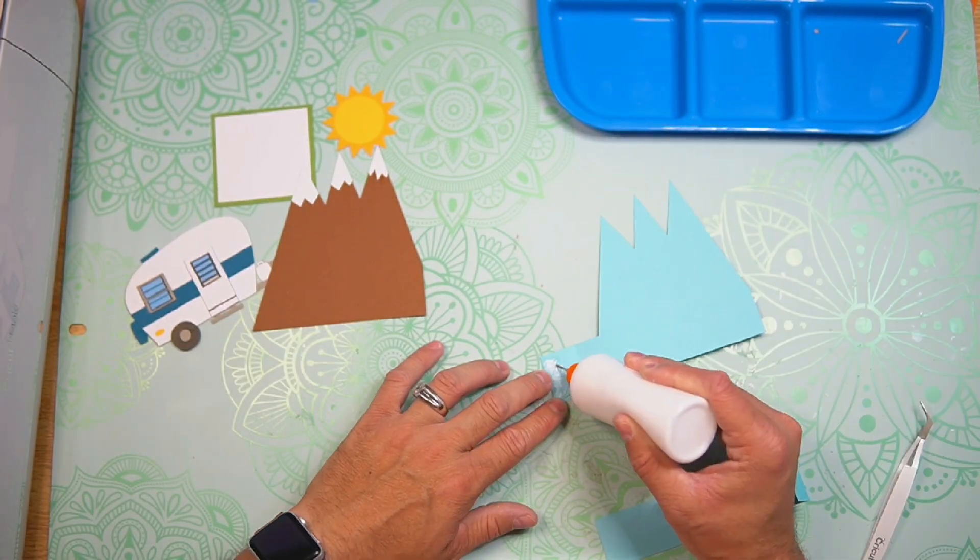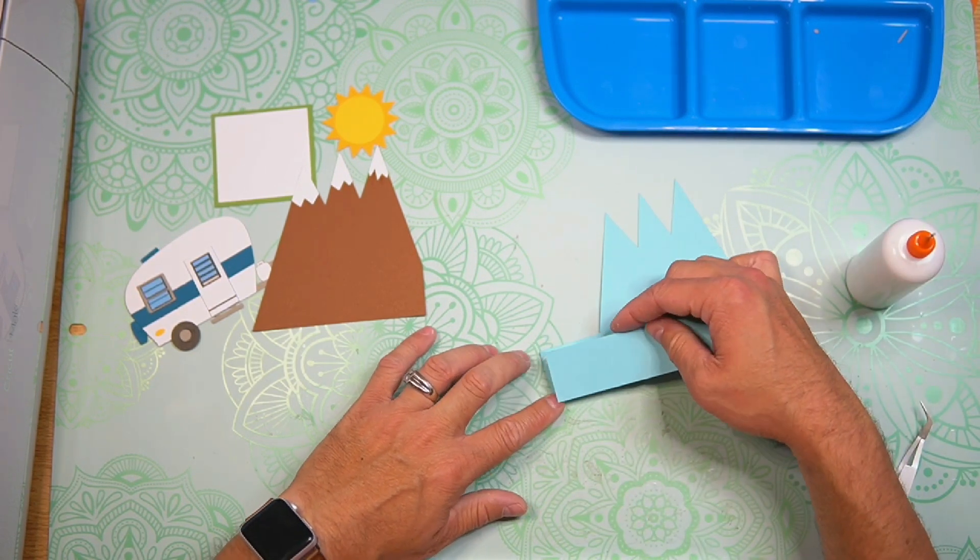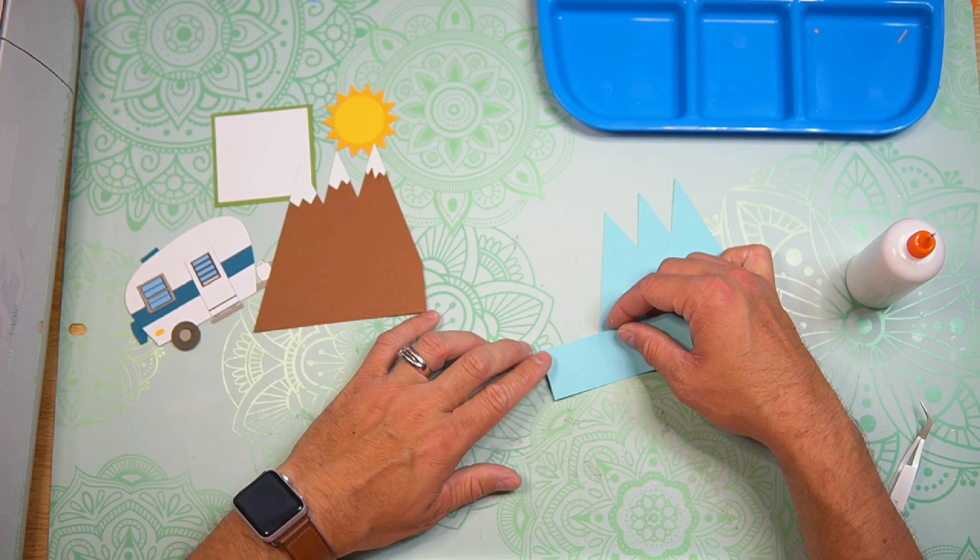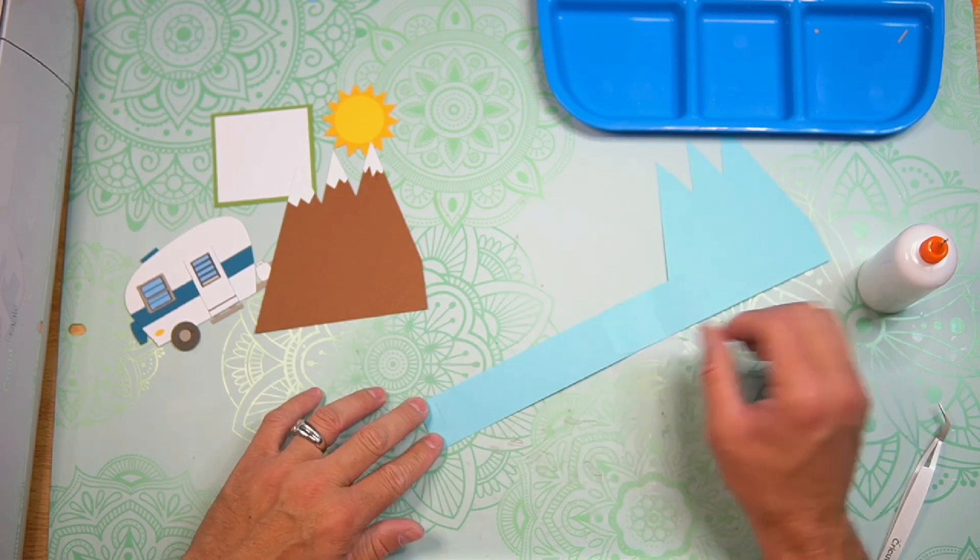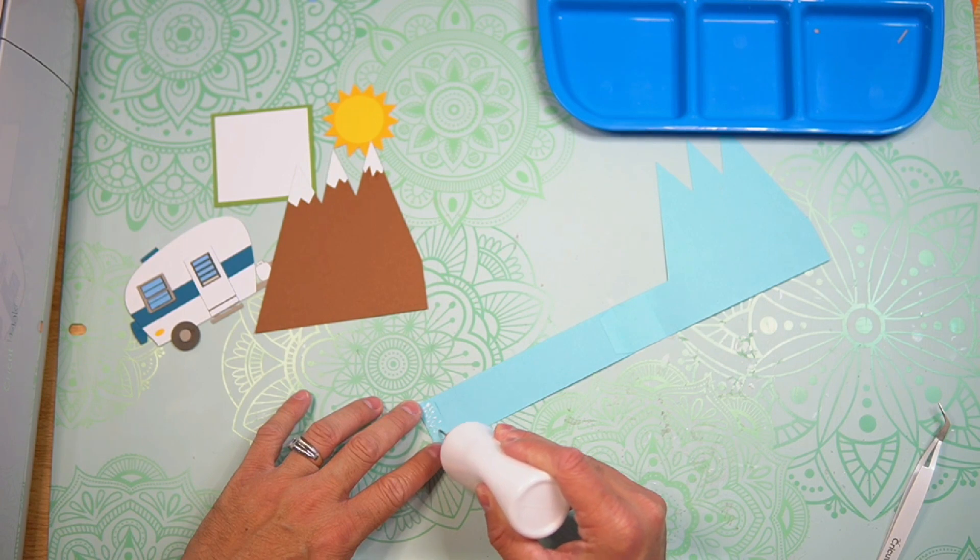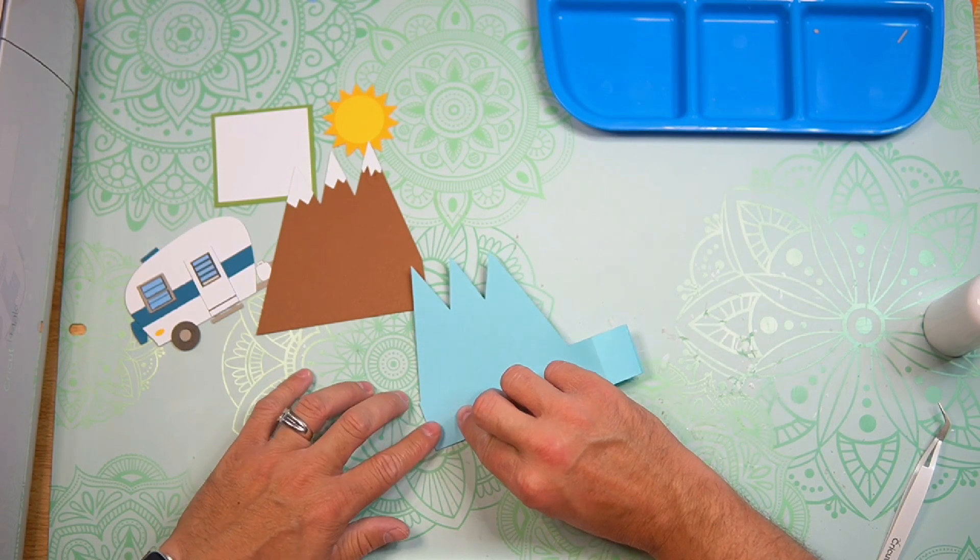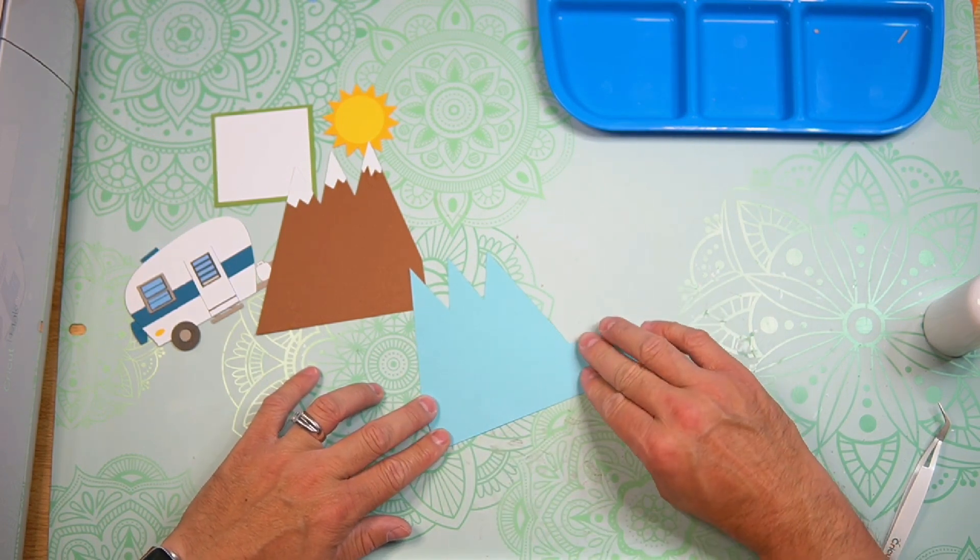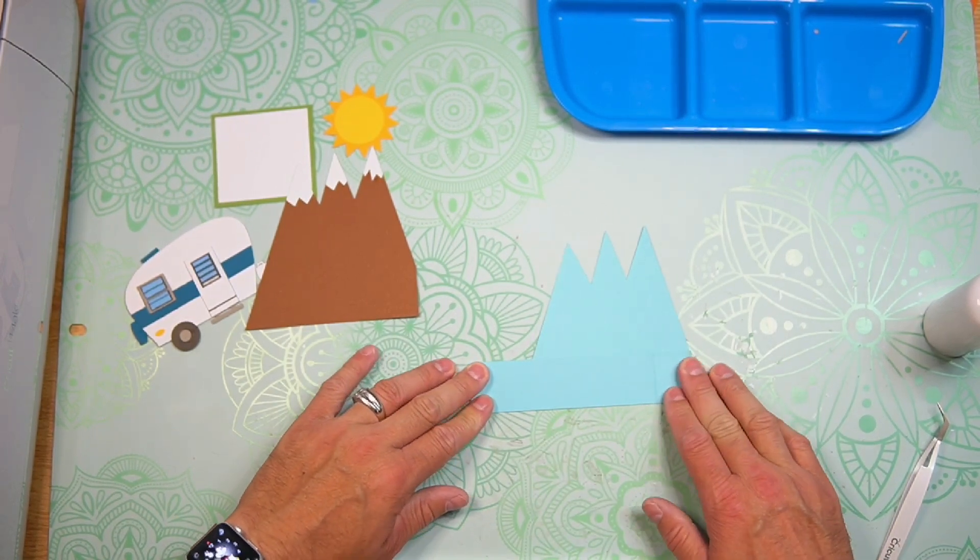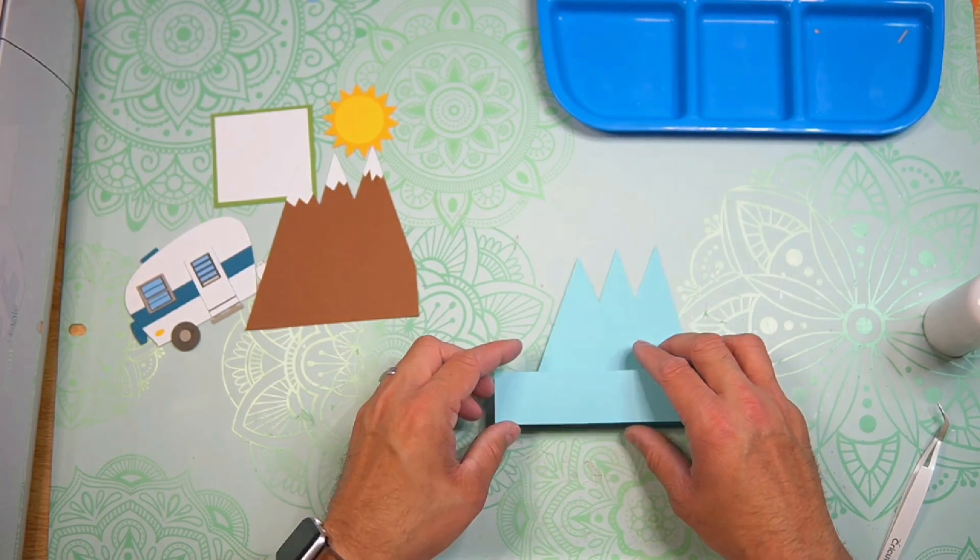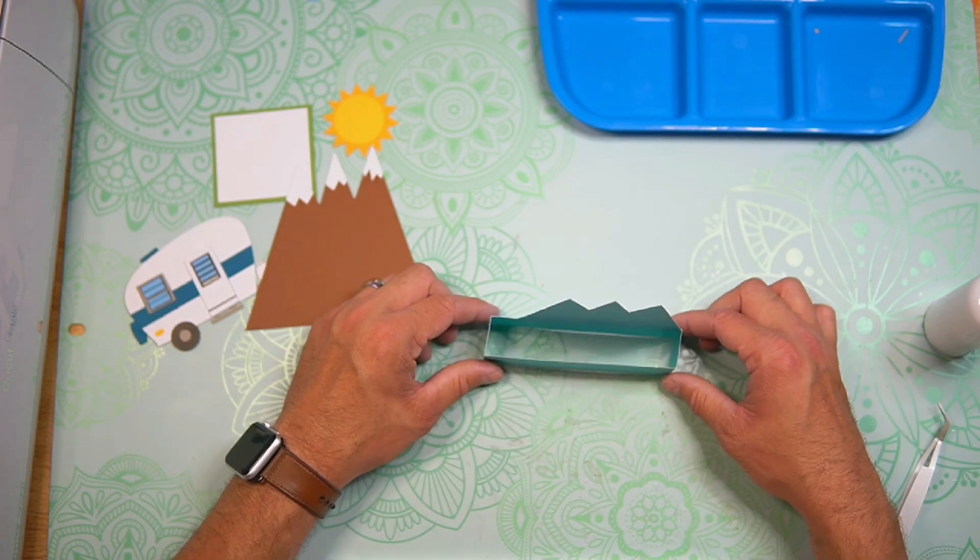And now to glue them together, I'm going to add glue to one tab. I'll take my front piece, and then just line up the edges. You're going to want to make sure to line up the left side and the bottom. And now we can add glue to the other tab. Bring the other side over. Give the card a nice fold to make sure that it sits properly. And there is our box.